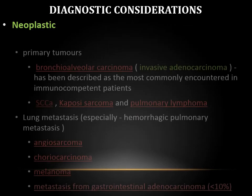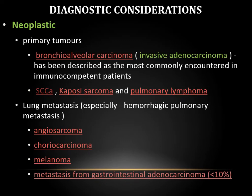Moving to neoplastic causes, the most common primary tumor causing this sign is bronchoalveolar carcinoma, now called minimally invasive adenocarcinoma. If we see such a nodule in a patient with normal immunity, we should suspect this tumor. It can also be seen in squamous cell carcinoma, Kaposi's sarcoma, or pulmonary lymphoma. The most common metastases showing this sign are hemorrhagic types, where the tumor tends to hemorrhage around itself — mainly angiosarcoma, choriocarcinoma, melanoma, and metastasis from GIT adenocarcinoma.